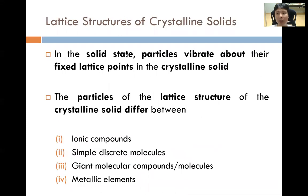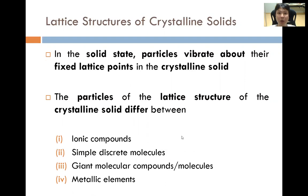In the solid state, from kinetic particle theory, we know that the particles vibrate over fixed lattice points in the crystalline solid. The only difference between the different types of structure is in the particles that make up the lattice structure. In ionic compounds, the particles are the oppositely charged ions. For simple discrete molecules, the molecules vibrate in their fixed positions. For giant molecular compounds, atoms vibrate over their fixed positions. For metallic elements, it is the metal cations that vibrate over their fixed positions.